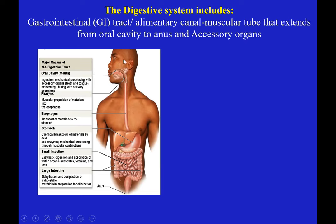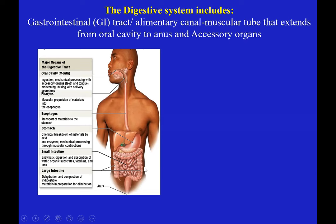All along the GI tract there are special cells. The mouth involves mechanical digestion; the stomach involves chemical and mechanical digestion. Liver, pancreas, and gallbladder all have special cells to help with digestion and absorption. All along the tube there are nerves — the digestive tract has its own nervous system called the enteric nervous system, which can make its own decisions based on the type of food. It is also a huge immune defense organ, containing mucosa-associated lymphatic tissue (MALT).